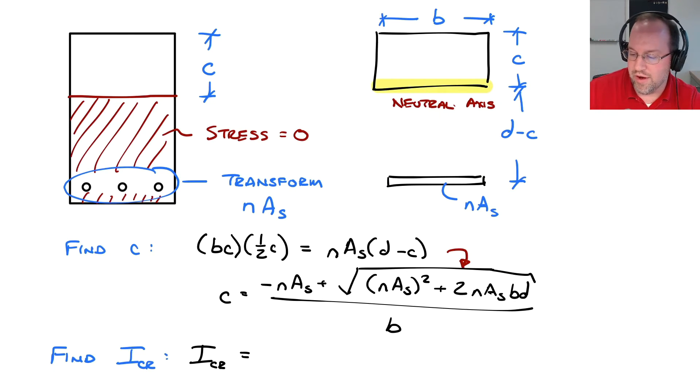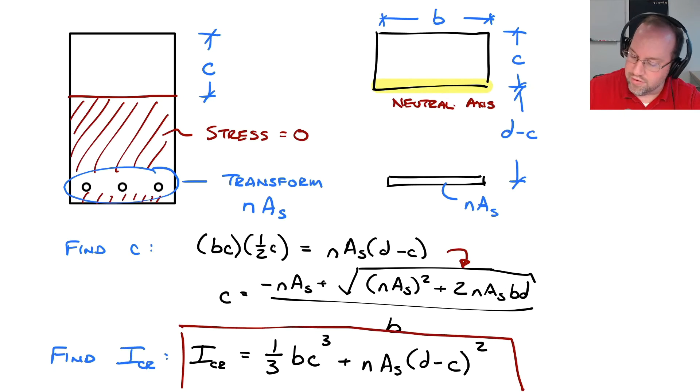The first area, normally when we see rectangles, we think 1/12 B H cubed, where H is the height of your second section. However, here we're bending it about the neutral axis. So we're bending it about the edge. So for this type of rectangle, it is 1/3 base times height cubed, and my height of that rectangle is C cubed. Then I need to consider my second section down here, and that is simply an area, N times AS, transferred over to the neutral axis. So that's a distance of D minus C, and that quantity has to be squared. And that equation will give me the cracked moment of inertia for a rectangular concrete beam.